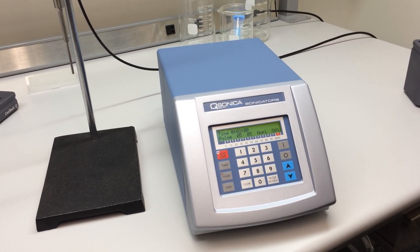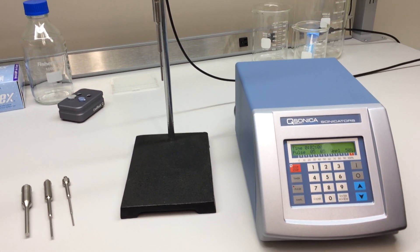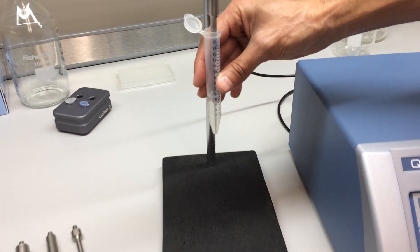Sonication generates heat, so when using an ultrasonic device, most users sonicate their sample on ice to help control temperature. In addition to ice, the pulse mode is used to help prevent overheating of your sample.